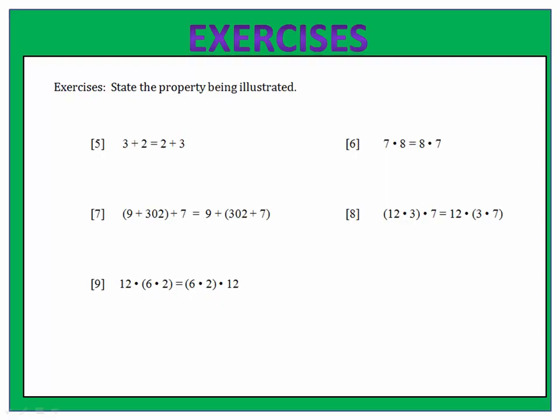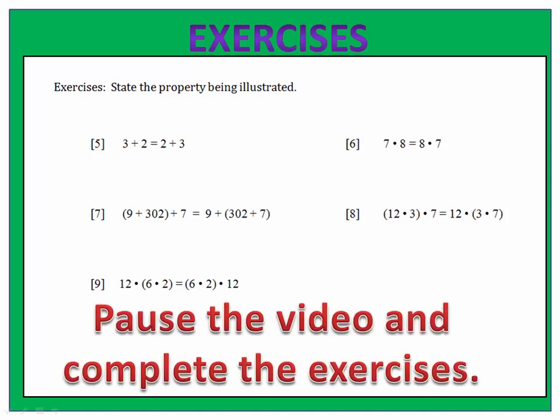Exercises five through nine ask us to determine the property that's being illustrated. The options are: the commutative property of multiplication, commutative property of addition, associative property of multiplication, associative property of addition, and the distributive property. Please pause the video here and complete the exercises.